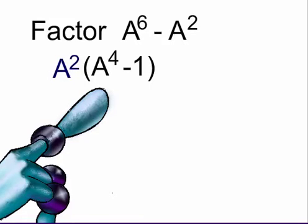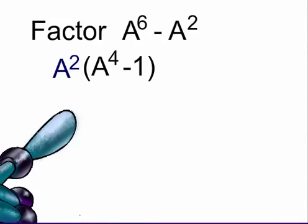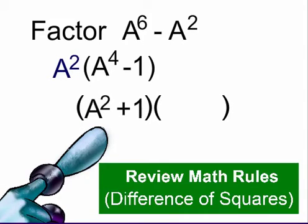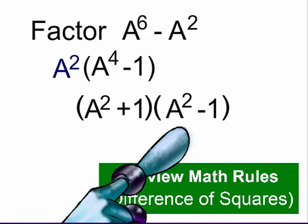a to the fourth minus one can further be factored as a difference of squares, a squared plus one, and a squared minus one.